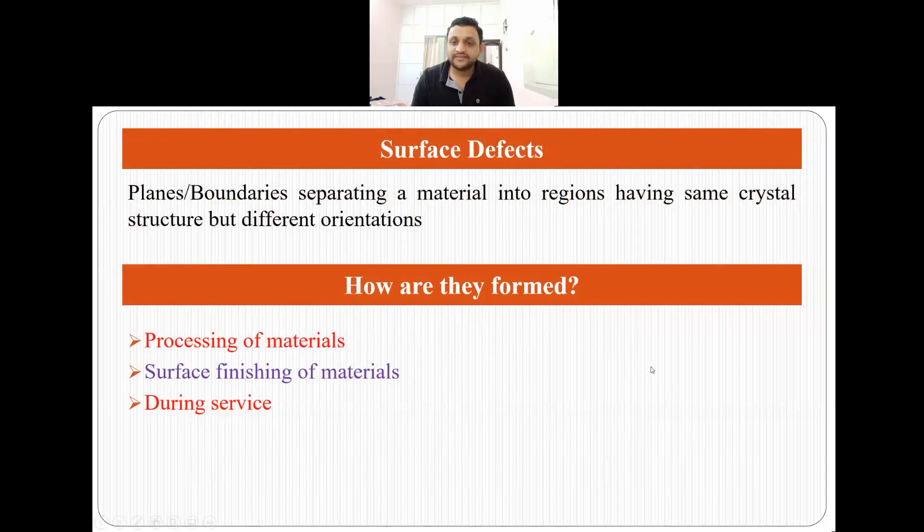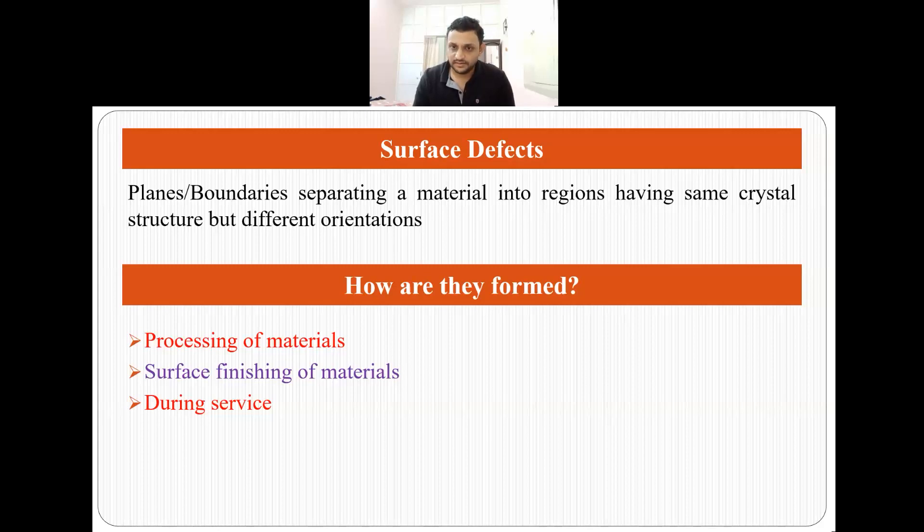So what are surface defects? Surface defects are planes or boundaries which separate a material into regions and these individual regions have same crystal structure but different orientation. Any plane or boundary which separates a material into regions having same crystal structure but different orientation is what we call as surface defect.